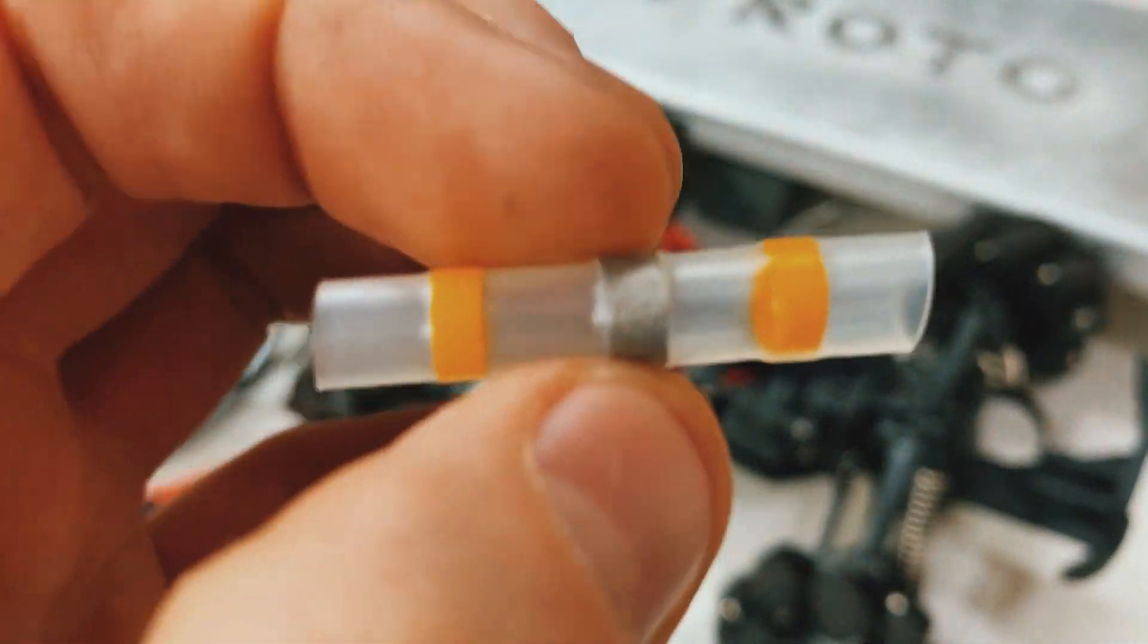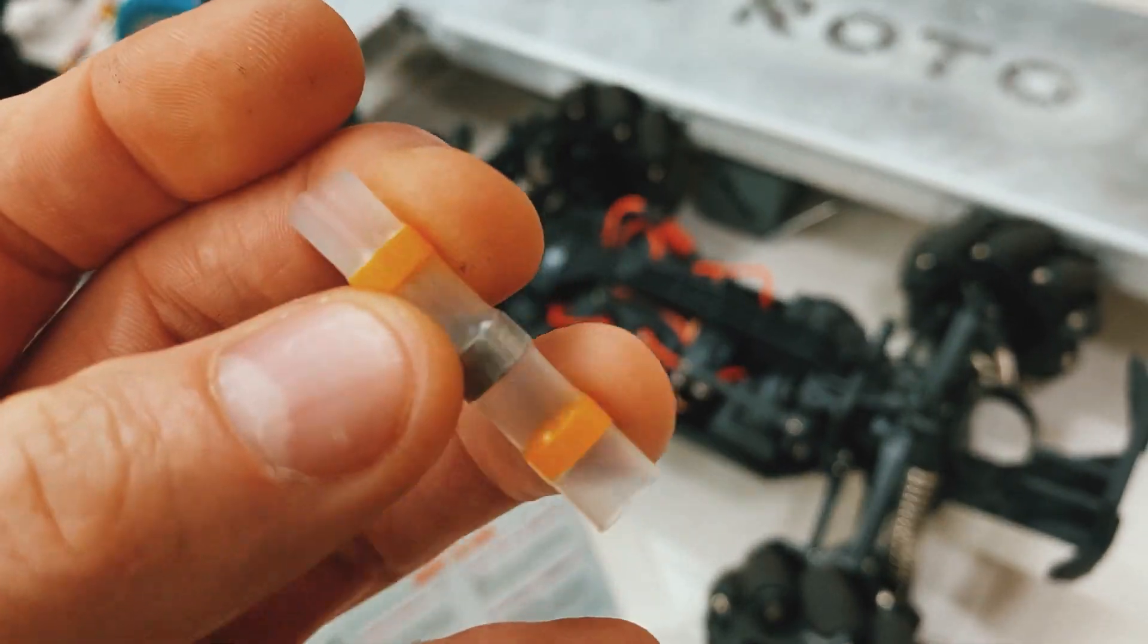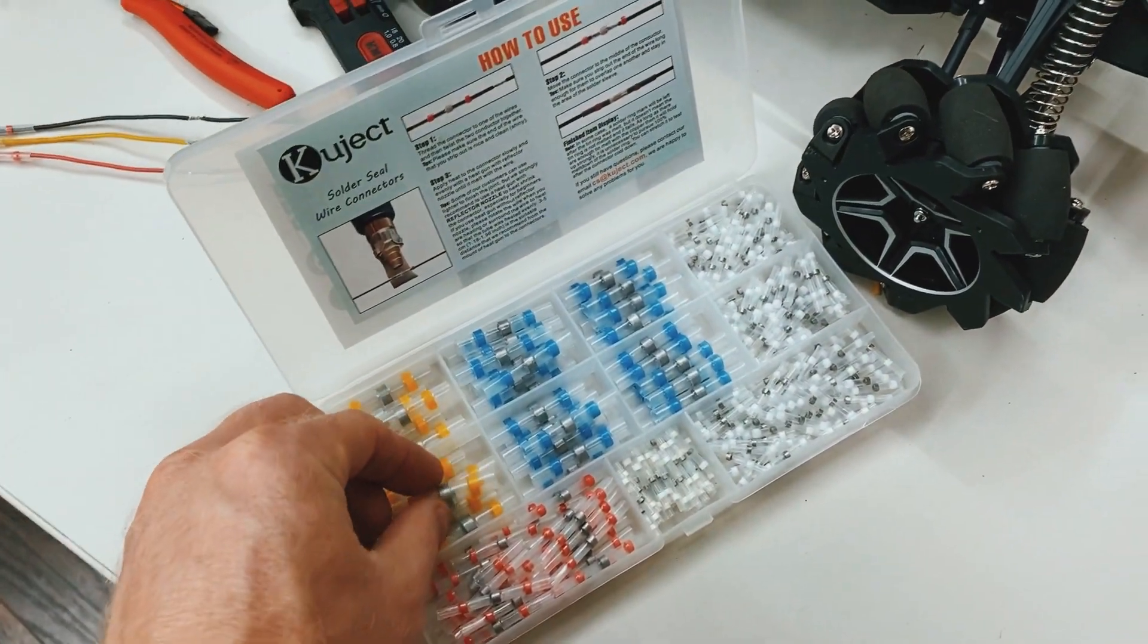not only will the tube shrink up, but it will solder your wires together and then the glue at the ends will seal the joint off so you have a nice watertight seal.